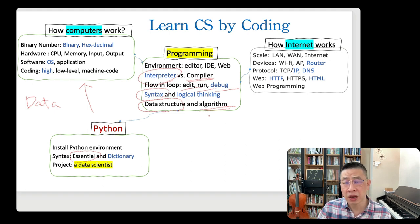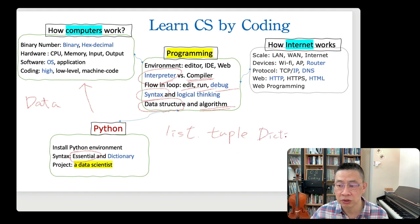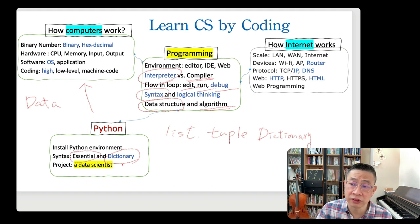We may involve some data structures incorporated with algorithms to make our code efficiently work on the problem. So what's a data structure in Python? They have some very nice built-in data structures - they have a list, have a tuple, and Python has a dictionary.